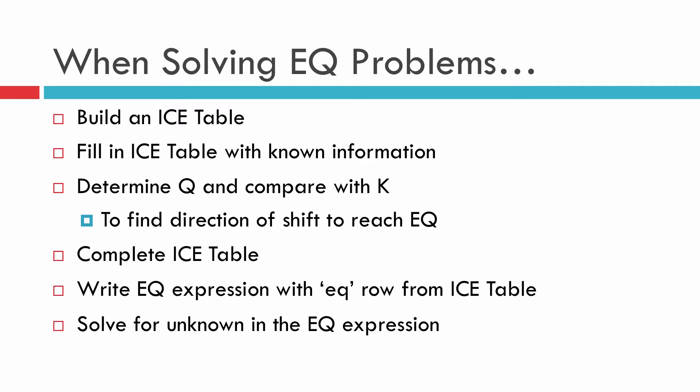It starts with this. Whenever we do an equilibrium problem, it's always the same. It doesn't matter whether we're doing it for acids, bases, gases, K sub p, K sub c. We're going to build an ICE table, fill that ICE table with the known information, determine Q, compare it to K, find the way the reaction will shift to reach equilibrium, then complete the ICE table, write the equilibrium expression using that equilibrium row from the ICE table, and finally solve for the unknown, whatever that is in our expression. Here's how we go about doing things in a problem that's got acids and bases.